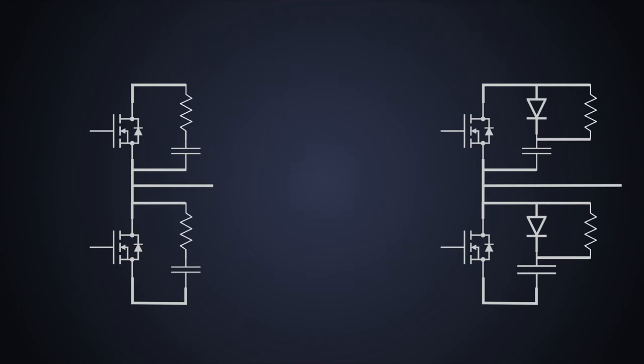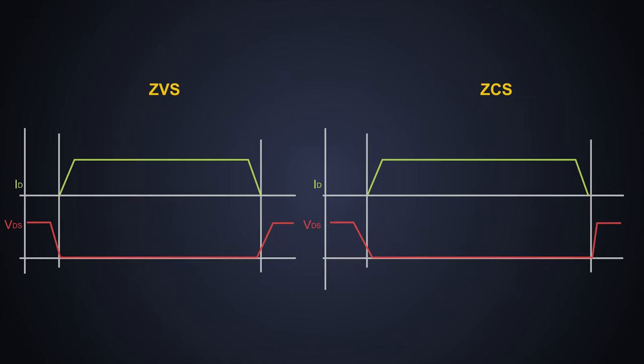This is achieved with the help of snubber circuits or zero voltage switching and zero current switching through resonant converters. This technique increases the efficiency of the power electronic converter so that we can use those in high-power applications.